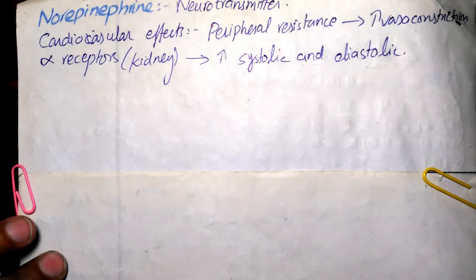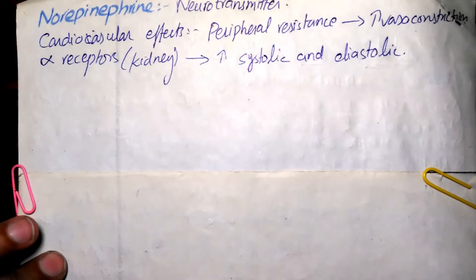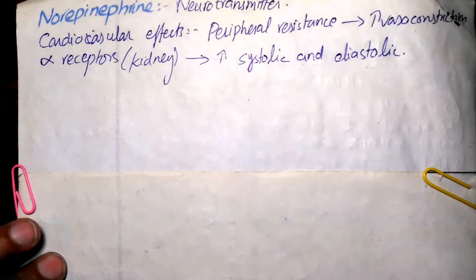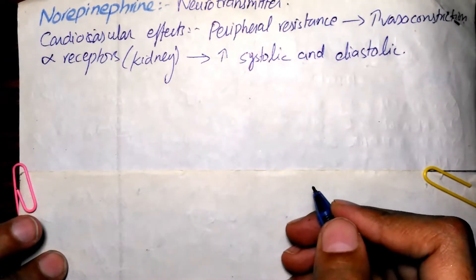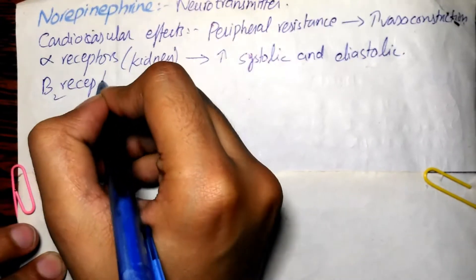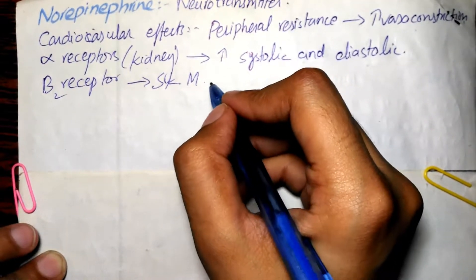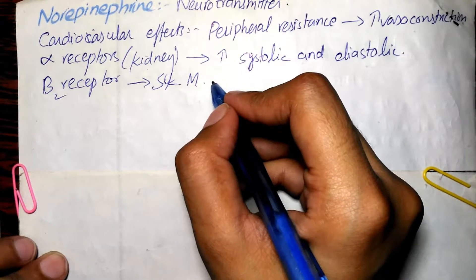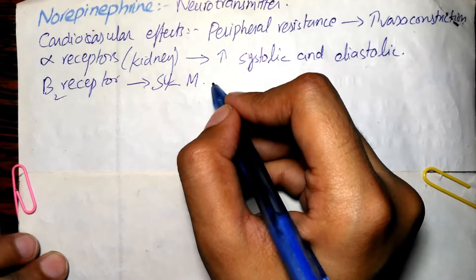In epinephrine there is a decrease in diastolic blood pressure with increase in systolic, but in norepinephrine both systolic and diastolic blood pressure increase. This is because norepinephrine does not cause compensatory dilation of vessels via beta-2 receptors on blood vessels supplying skeletal muscles, since it does not have good binding affinity for beta receptors — causing vasoconstriction only via alpha receptors.